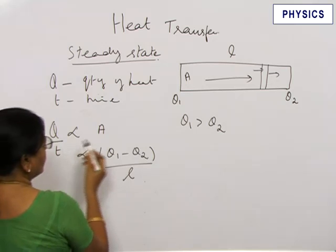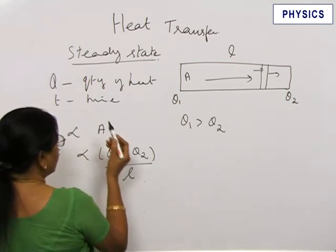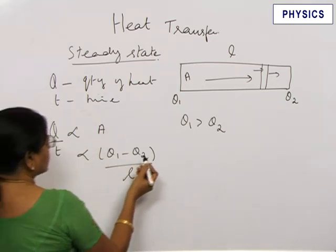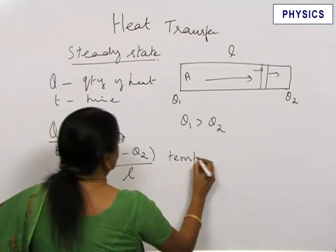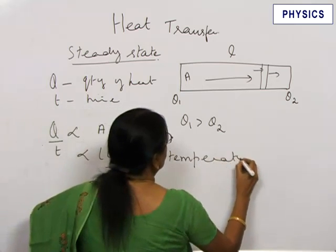The quantity of heat conducted per unit time is proportional to area of cross section and the temperature gradient. This is called as the temperature gradient.